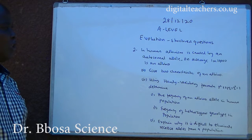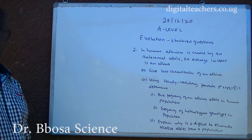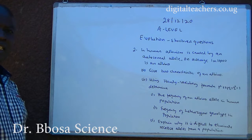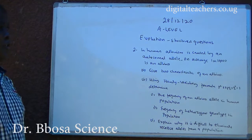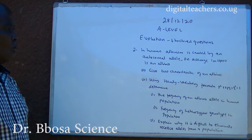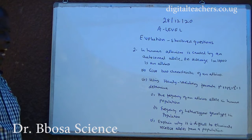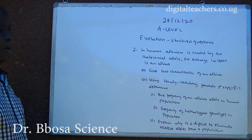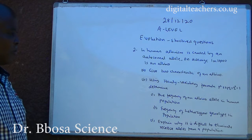Number two, in humans, albinism is caused by an autosomal allele. On average, one in 10,000 is an albino. A. Give two characteristics of albinism. B. Using Hardy-Weinberg formula, p squared plus 2pq plus q squared equals 1, determine: